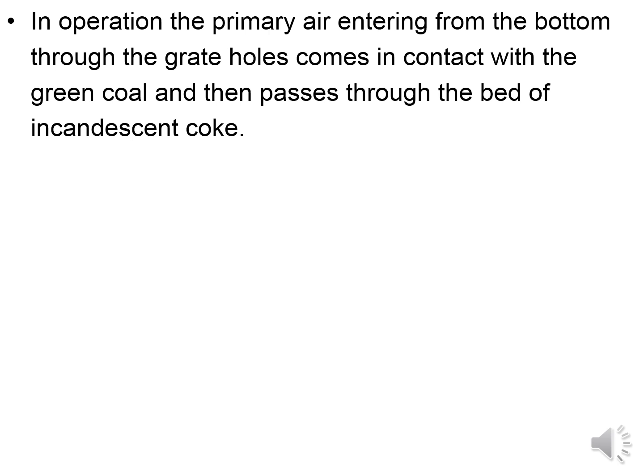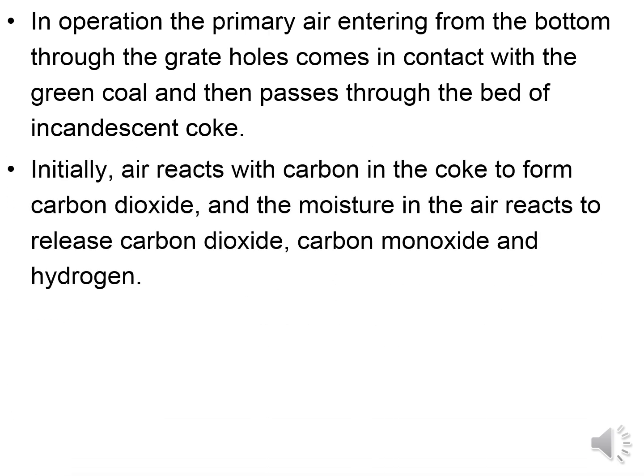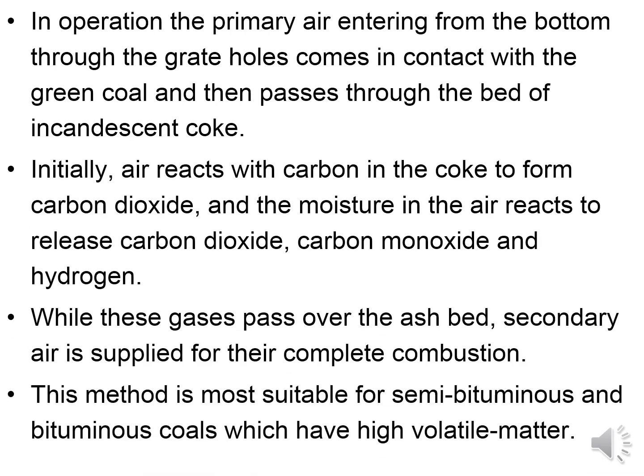In under-feed stoker operation, primary air entering from the bottom through the grate comes in contact with green coal and then passes through the bed of incandescent coke. Air initially reacts with carbon in the coke to form carbon dioxide, and moisture of the air reacts to release carbon dioxide, carbon monoxide, and hydrogen. This method is most suitable for semi-bituminous and bituminous coals, which have higher volatile content.